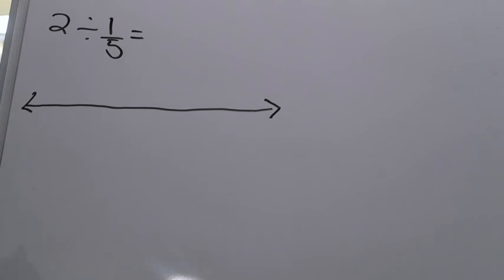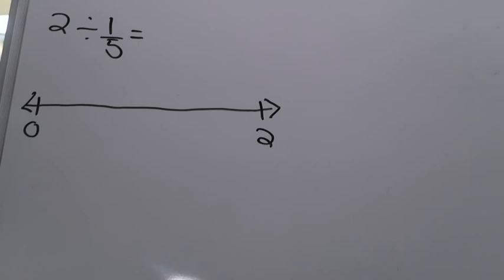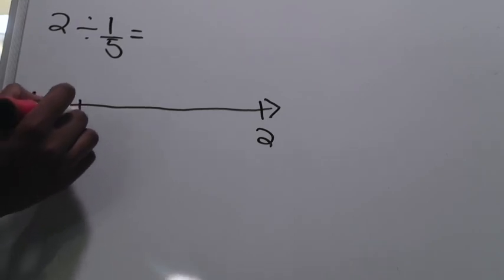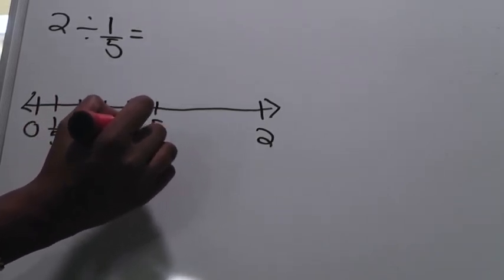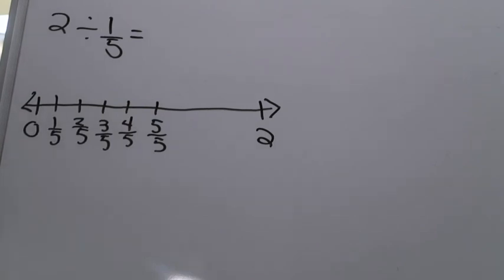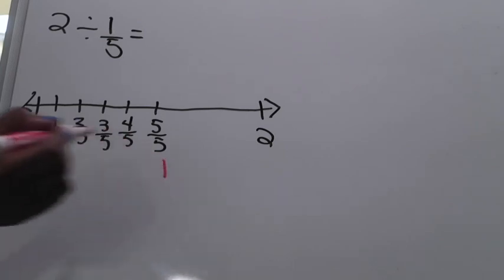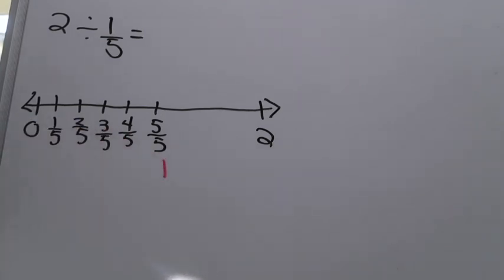I'm drawing a number line long enough to reach two, starting at zero and ending at two. The fractional part of the problem tells me how to divide that number line up. Since the fraction is one-fifth, I'm going to divide it into fifths: one-fifth, two-fifths, three-fifths, four-fifths, and then five-fifths. I'll stop there because five-fifths represents one whole, so I put the number one there.